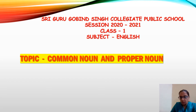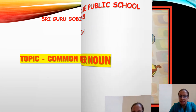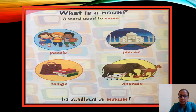But before that, let's read what is a noun — let's revise it. A word used to name people, places, things and animals is called a noun.